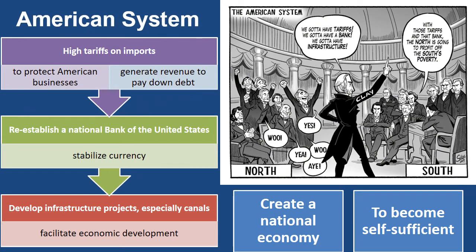Henry Clay created an integrated economic program called the American System. This envisioned a protective tariff, a national bank jointly owned by private stockholders and the federal government, and federal support for transportation projects, or internal improvements. Public lands in the West were to be sold rather than given away to homesteaders so the proceeds could be used for education and internal improvements. The program was designed to promote economic development and diversification, reduced dependence on imports, and tied together the different sections of the country.